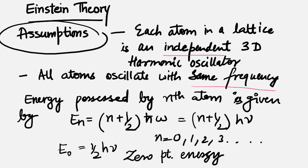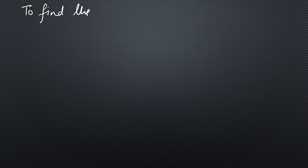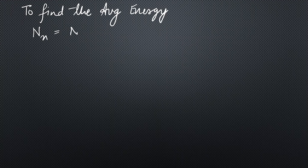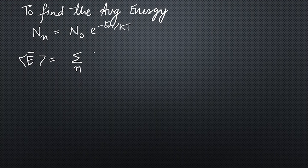Now let's move to the expression derivation. We follow the same procedure as in the classical case. First we find the average energy. The number of atoms occupying the nth energy level is given by N₀ · exp(−Eₙ/kT). We use summation because the energy levels are discrete, not continuous.